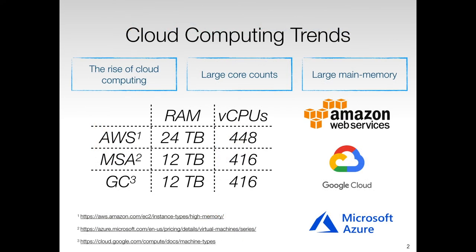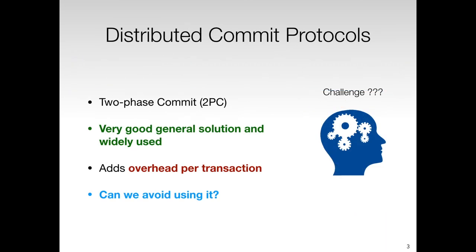Our research is motivated by the advances in cloud computing services. For example, major cloud providers such as Amazon, Google, and Microsoft are already providing virtual and distributed computing clusters equipped with terabytes of main memory and several hundreds of CPUs. Therefore, transaction processing systems that can take advantage of such modern computing environments can further provide business value to users and enterprises.